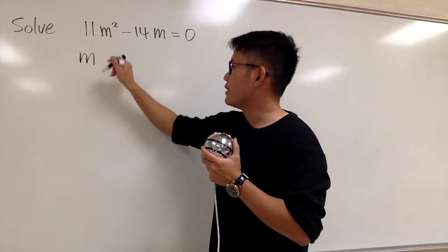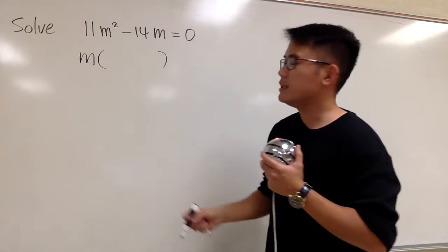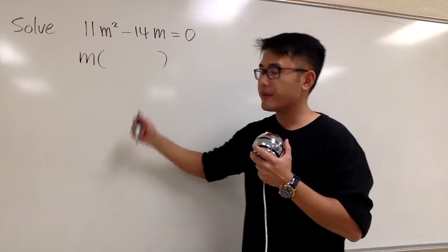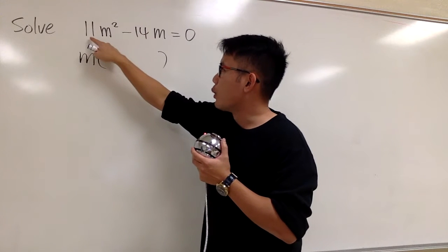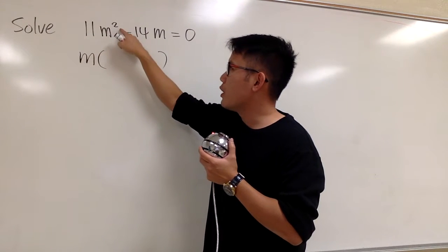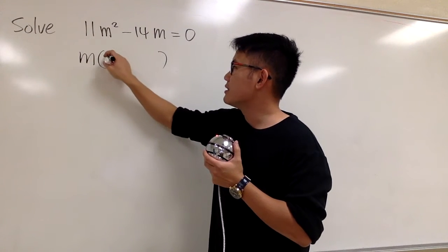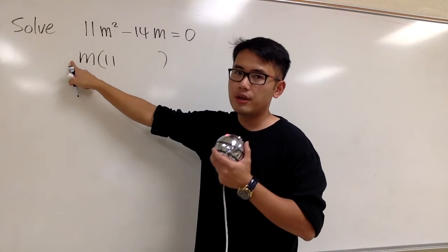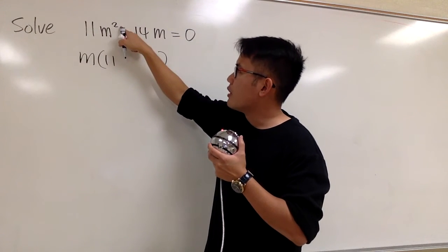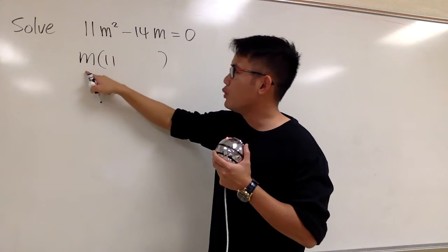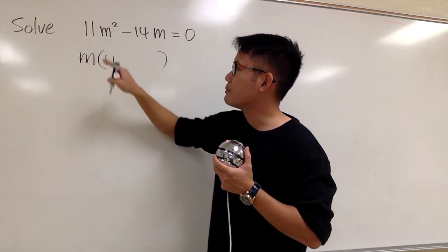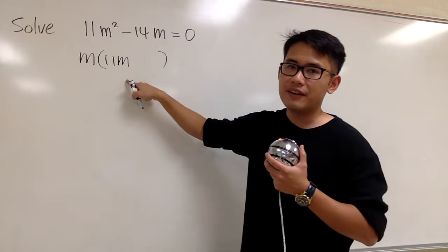So, I'm just going to factor out the m and then open the parentheses for the remaining part right here. The first part right here, originally, it was 11m squared. Well, the 11 stays because we didn't take out any number, but then m squared, that's the original, we took 1 out. m to the first power. So, we have m to the first power left.